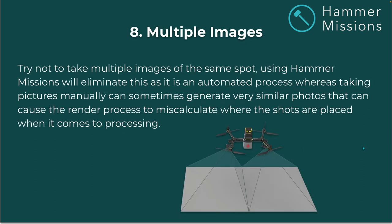Multiple images: try not to take multiple images of the same spot. Using Hammer Missions will eliminate this as it's an automated process, whereas taking pictures manually can sometimes generate very similar photos that cause the render process to miscalculate where the shots are placed. You can get images that sit on top of each other, sometimes making the picture look expanded or blown out. It's best to use an automated process so you don't have to worry about photos overlapping.